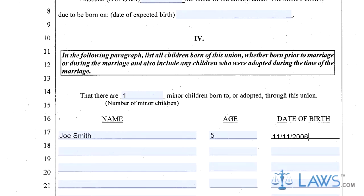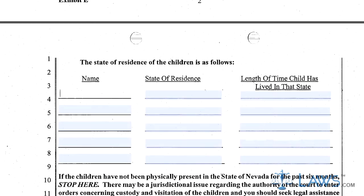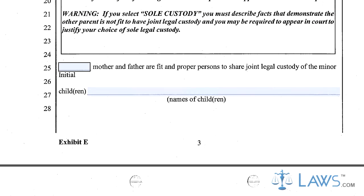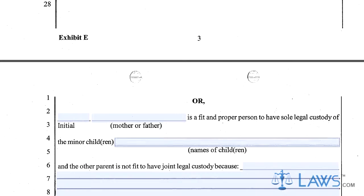Step 4: In Sections 4 and 5, list all children's names, ages, dates of birth, and the addresses of every child.